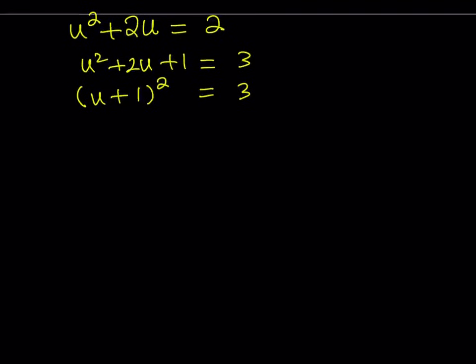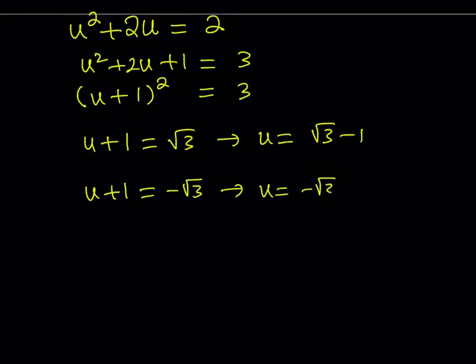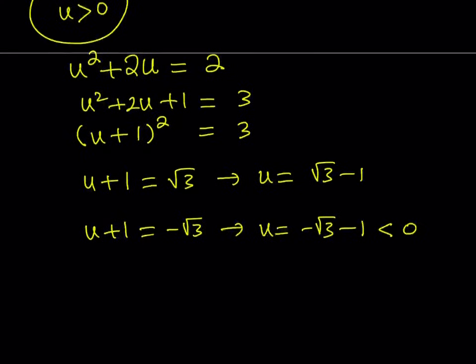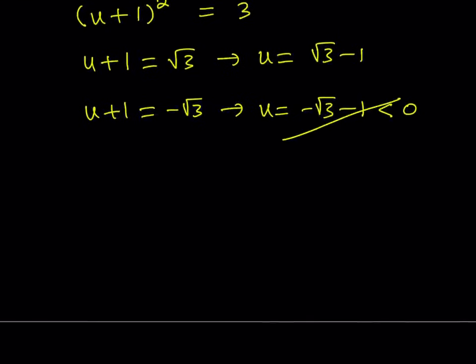We can take the square root and we get two solutions. u plus 1 equals root 3 or u plus 1 equals negative root 3. From here, we can isolate u. u becomes root 3 minus 1 or u becomes negative root 3 minus 1. Negative root 3 minus 1 is less than 0, so that is not allowed because we know that x and u both have to be positive. So this is not acceptable.